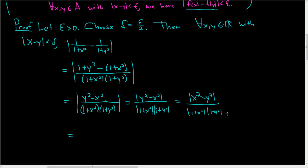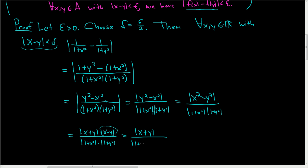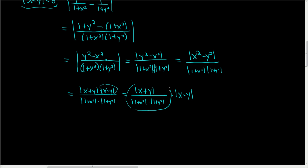In fact, this is how I figured out the problem — I just started writing things down and seeing what happens. Using difference of squares, we can write this as |x+y|·|x−y| over (1+x²)(1+y²). We have |x−y| < δ, so that part is taken care of. We write this as |x+y| / [(1+x²)(1+y²)] times |x−y|. If we can show this first factor is bounded, we are set, since we know |x−y| < δ.